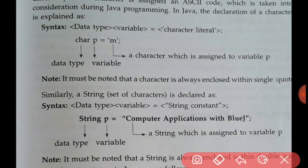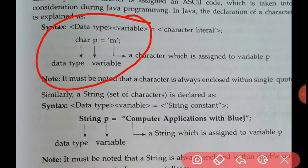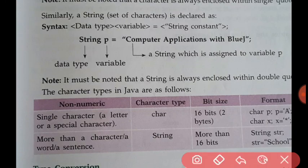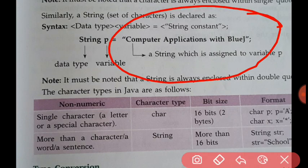Remember, character is written in single quotation marks and string is written in double quotation marks. String is a group of characters — it is fixed at two bytes, but actually it is not fixed; it can be more than two bytes because we can use as many characters as we want.